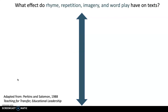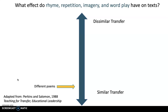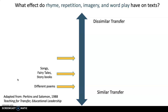For language arts, I might look at the concepts of rhyme, repetition, imagery, and wordplay. I'd start by looking at those concepts in different poems — very similar transfer. Then I might transfer to songs, fairy tales, and storybooks. Then to proverbs, adages, and idioms, each one being its own transfer task. And then maybe to political speeches — each step intentionally increasing the dissimilarity of the transfer.